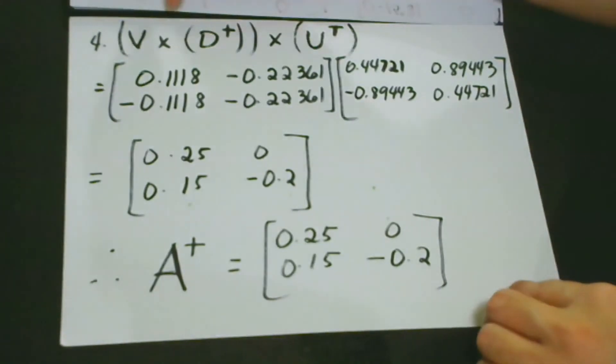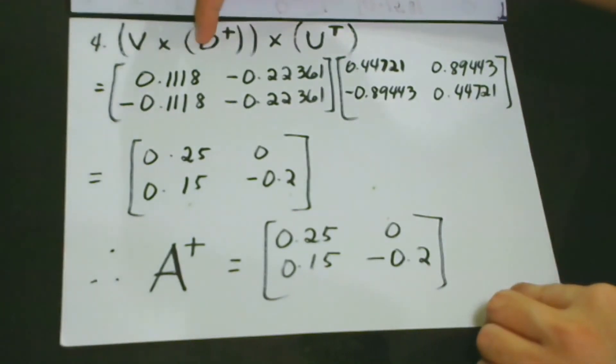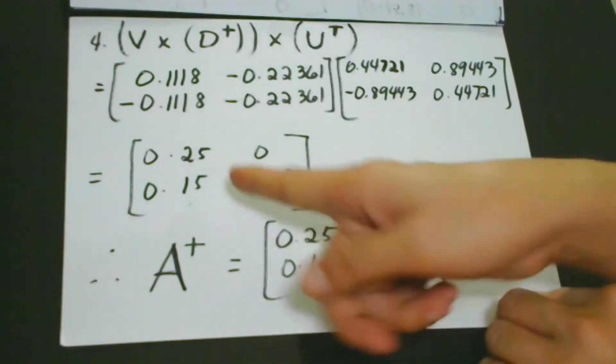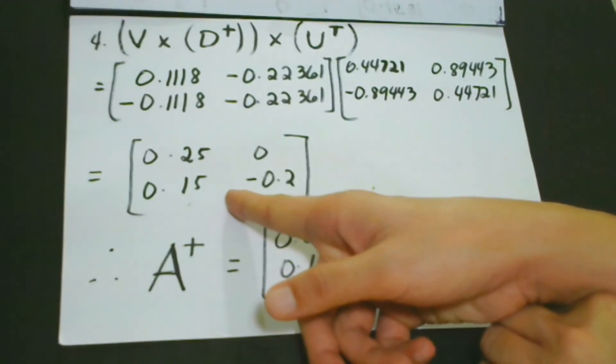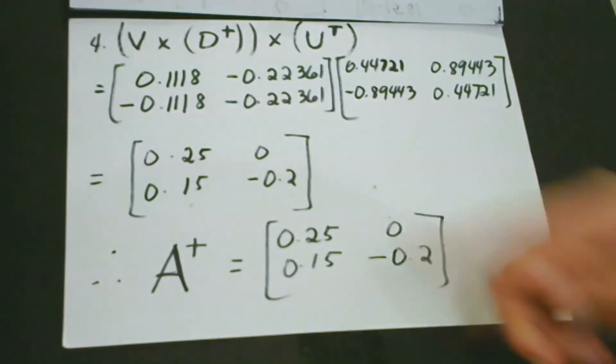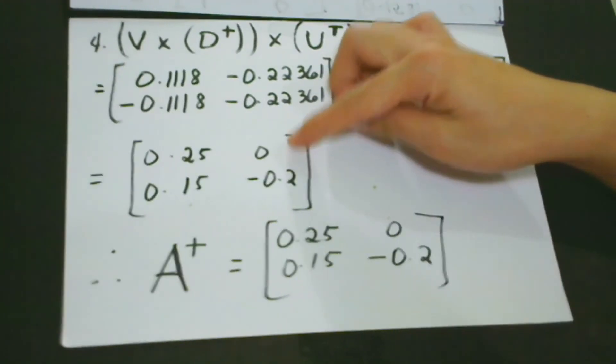When we multiply this and this, then we get this one. Now, maybe you would ask me, what is the significance of this? What is this one then?